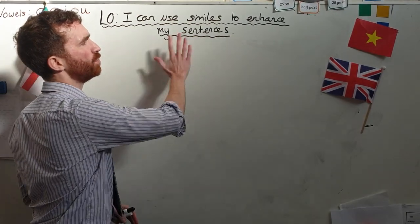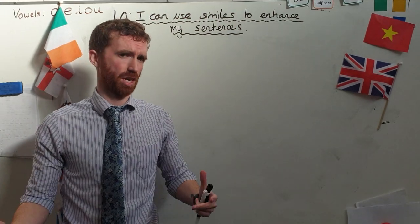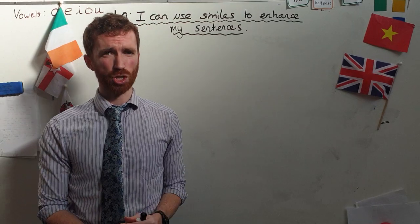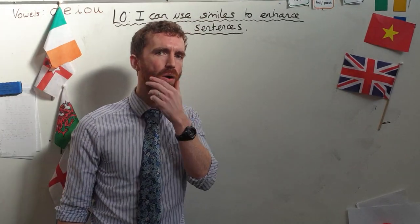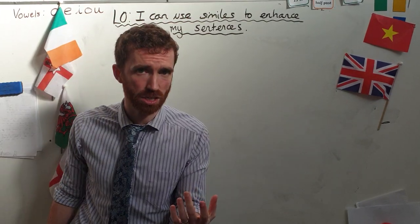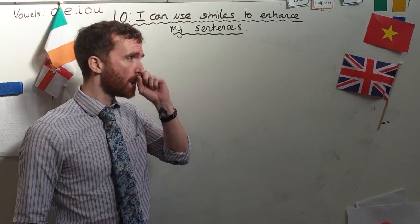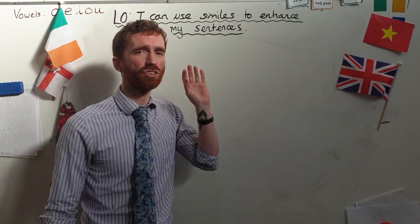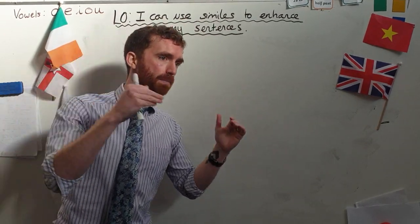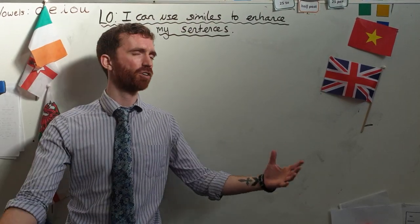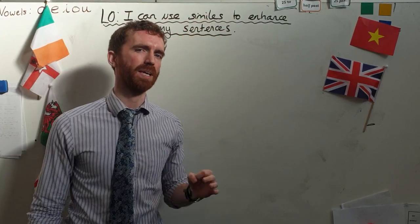This lesson, I can use similes to enhance my sentence. We're still on this old enhancing sentence thing - it's all about varying our sentences as much as possible. In another video, we had a look at how we use adj-adj noun, how we can enhance our sentence by popping in two adjectives. We've also been looking at varying our sentence openings - embedded clauses, subordinate clauses, front adverbials - so many different things. But today it is similes and how similes can enhance my sentences.